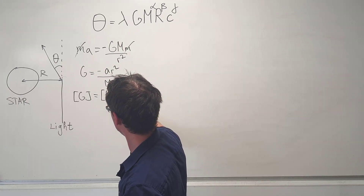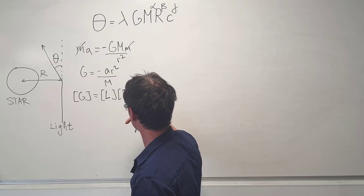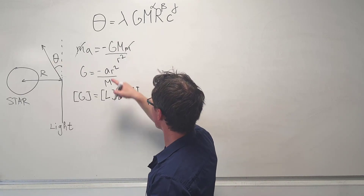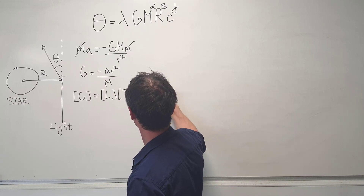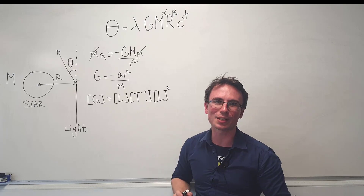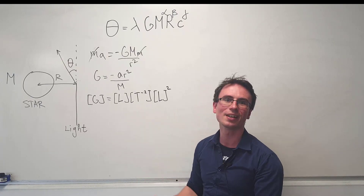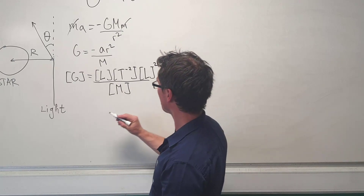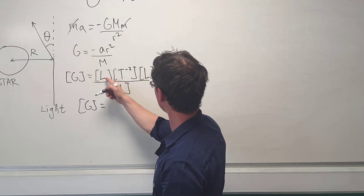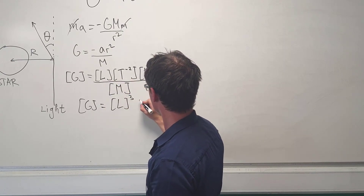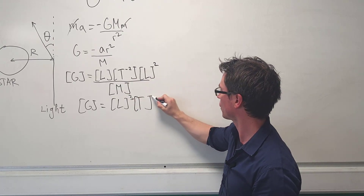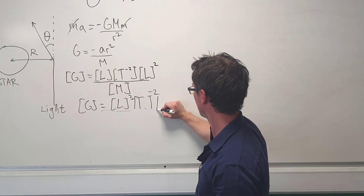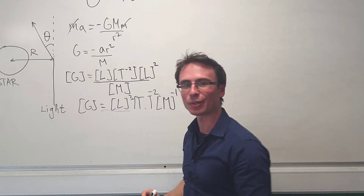So the dimensions of G will be length times time to the power of minus two — that's meters per second squared — multiplied by length squared, then divided by mass. Simplifying, the dimensions of G are L³ · T⁻² · M⁻¹.